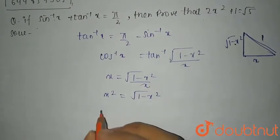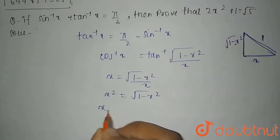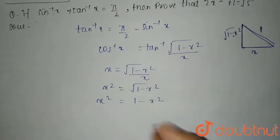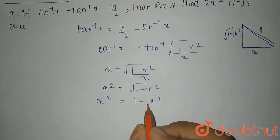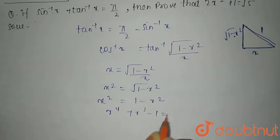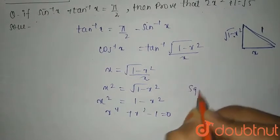Now squaring both sides, you will have x square equals 1 minus x square, which will give you x to the power 4 plus x square minus 1 equals 0.